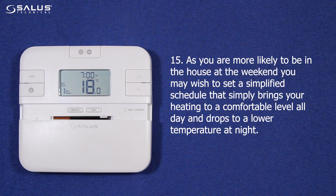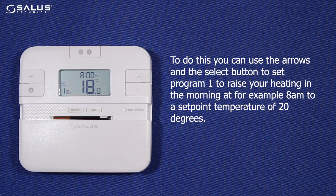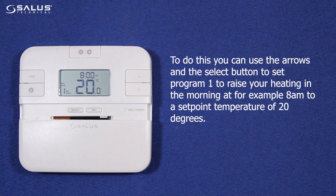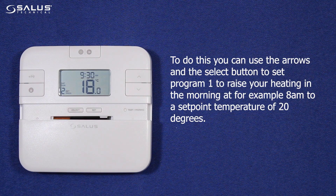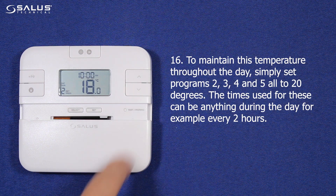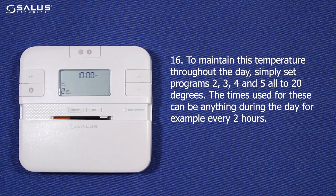Step 15: As you are more likely to be in the house at the weekend, you may wish to set a simplified schedule that simply brings your heating to a comfortable level all day, and drops to a lower temperature at night. To do this, use the arrows and the select button to set program 1 to raise your heating in the morning at, for example, 8 a.m., to a set point temperature of say 20 degrees. To maintain this temperature throughout the day, simply set programs 2, 3, 4 and 5 all to 20 degrees. The times used for these can be anything during the day, for example every 2 hours.